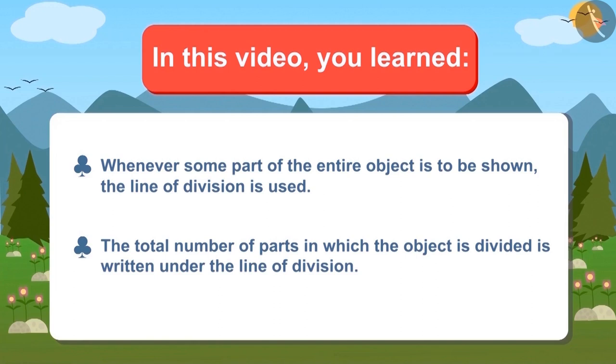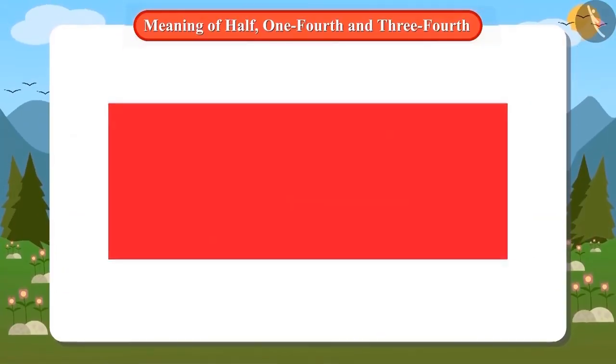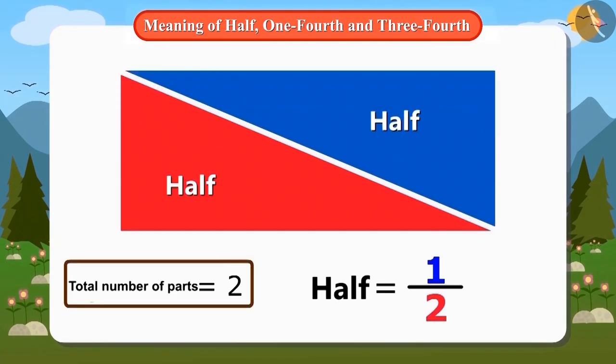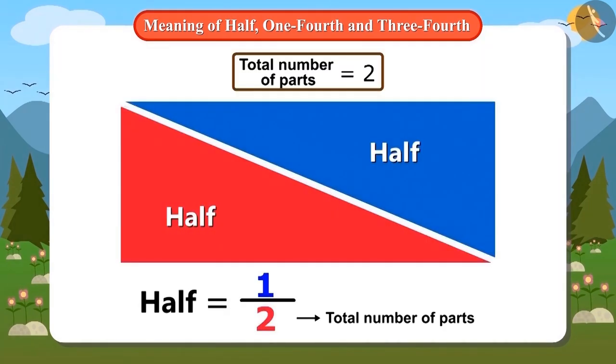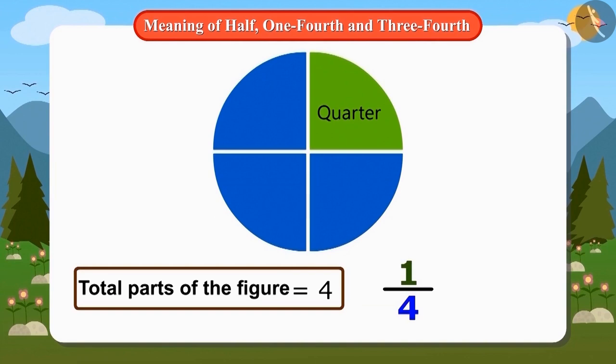The total number of parts in which the object is divided is written under the line, and the number of parts out of the total is written above the line. For example, to show half of an object, one by two is written, which means one part out of two. And one by four is written for one-fourth, which means one part of four.